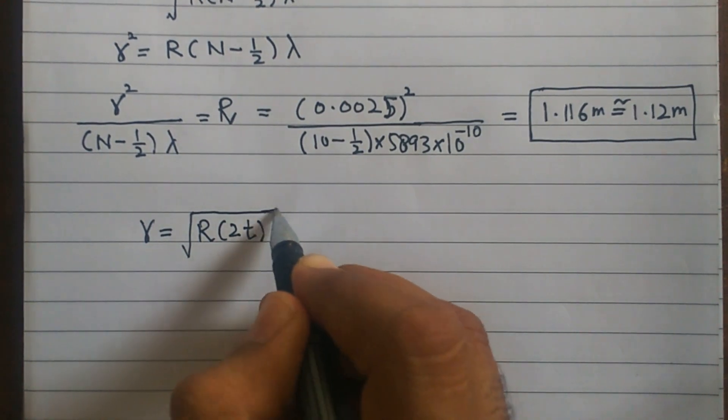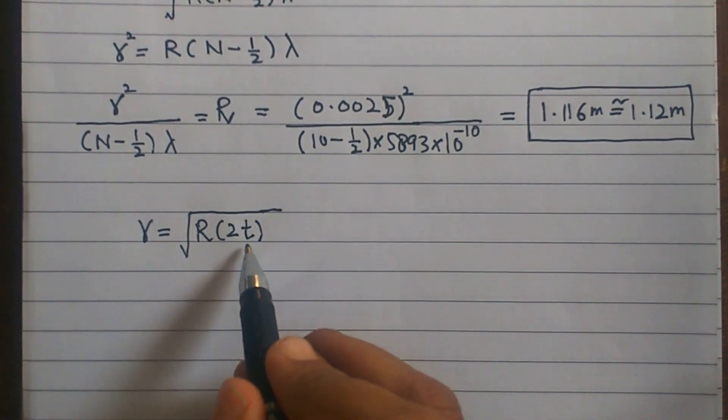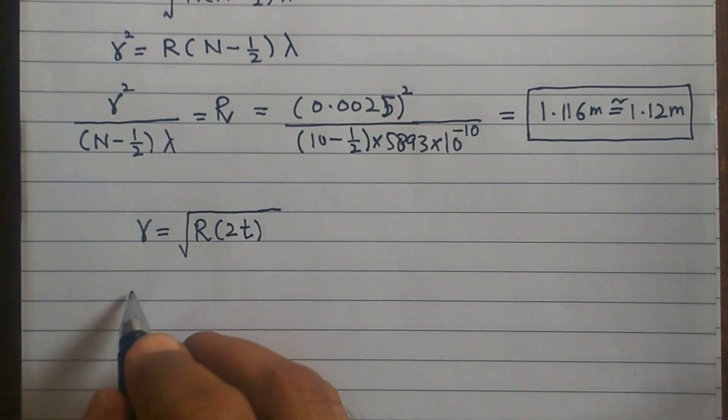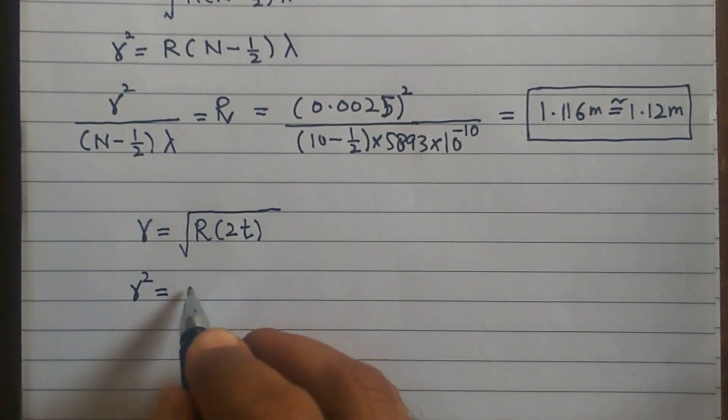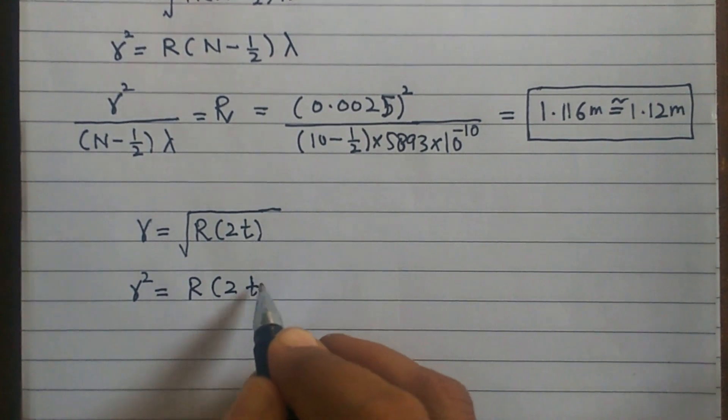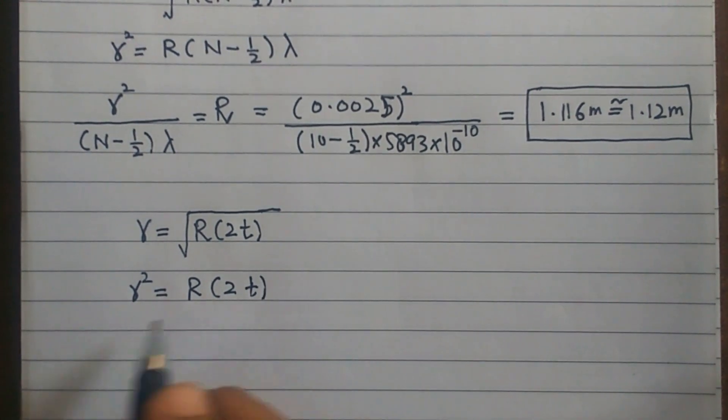This is our formula, which has thickness T. If you have to remove T, then what will happen? R square equals R into 2T. Since you want T, take the rest of the equation.